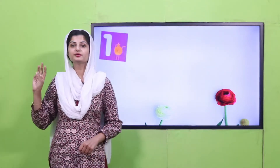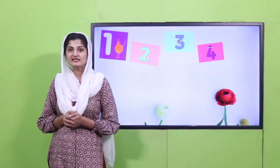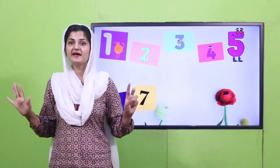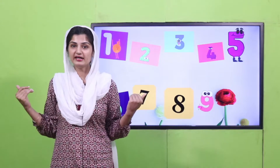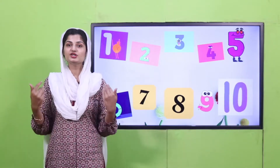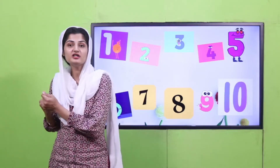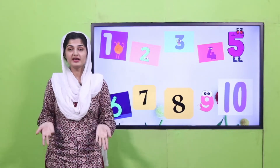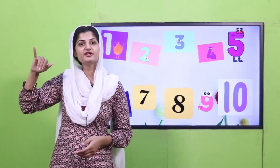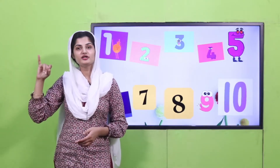One, two, three, four, five — once I caught a fish alive. Six, seven, eight, nine, ten — then I let it go again. Why did you let it go? Because it bit my finger so. Which finger did it bite? This little finger on my right. This little finger on my right.